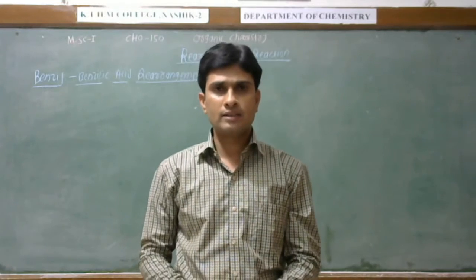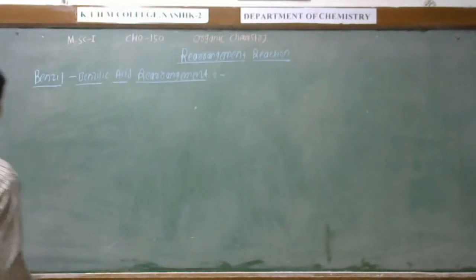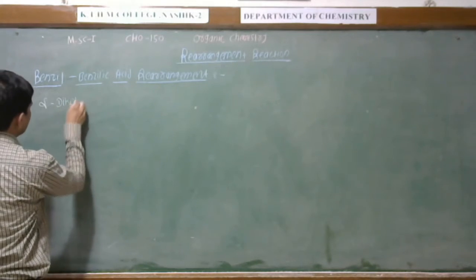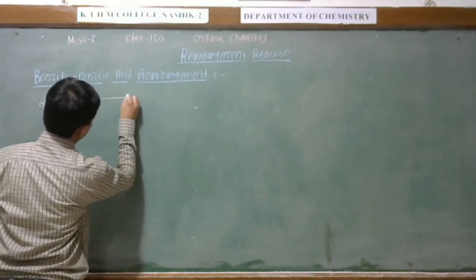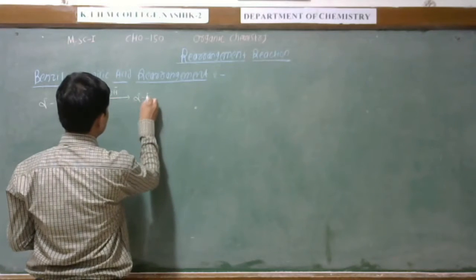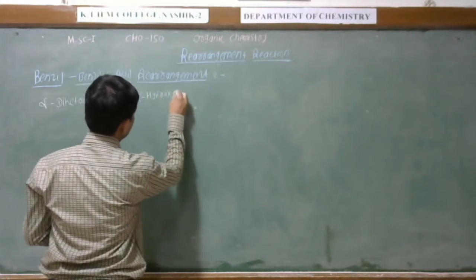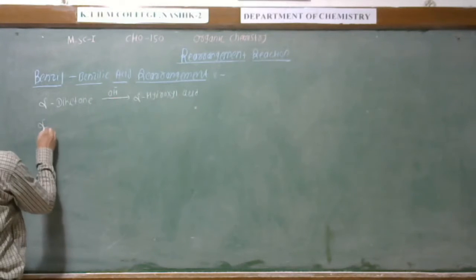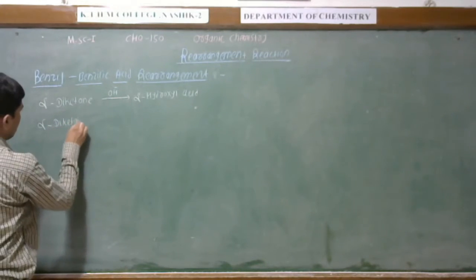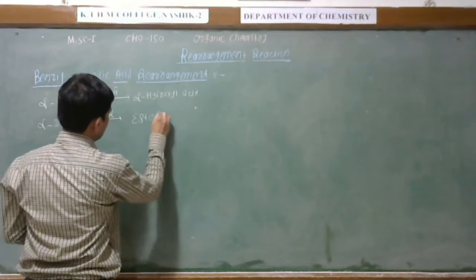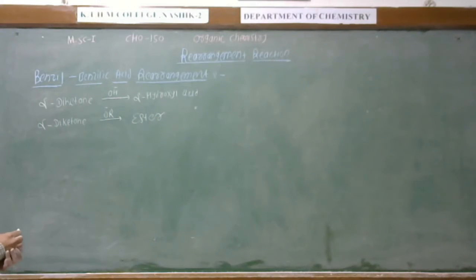Let us discuss the conversion: when alpha diketone reacts with a hydroxyl group, it gives alpha hydroxy acid. When alpha diketone reacts with an alkoxyl group, it gives an ester. This conversion is performed by the benzyl to benzylic acid rearrangement.